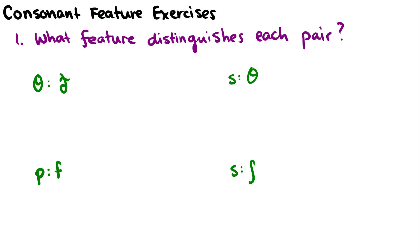So the first exercise I have four phonetic pairs here and I'm asking which one feature distinguishes each pair. For this first one with θ and ð, which feature distinguishes between these two sounds? The first one of course is going to be plus or minus voice. The θ on the left is minus voice, the ð on the right is plus voice.